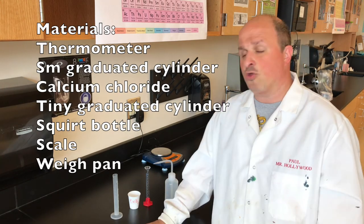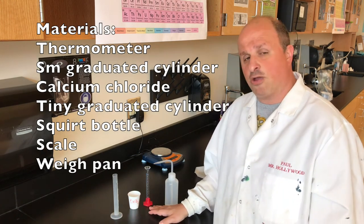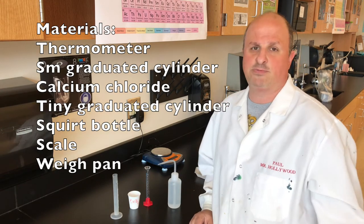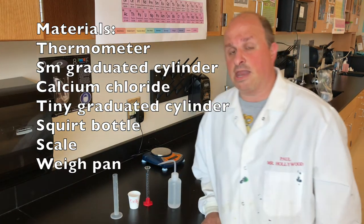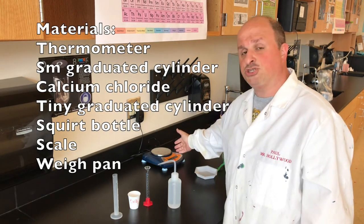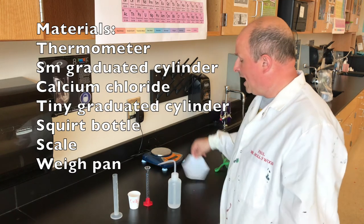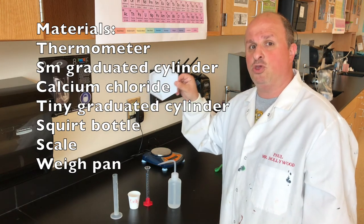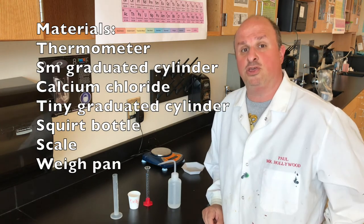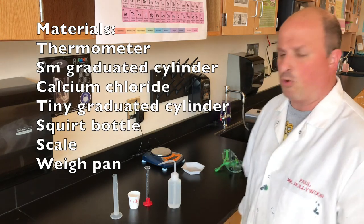So again, thermometer, small graduated cylinder, calcium chloride, tiny graduated cylinder, and spray bottle. And of course water, but that will be in the spray bottle. Now, for this lab, you're also going to need an electronic balance or scale, which will be used to weigh your calcium chloride, and you'll need a weigh pan, W-E-I-G-H pan. That's how you're going to measure the amount of calcium chloride that you use, is by weighing it.